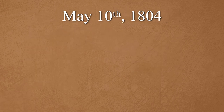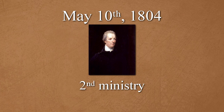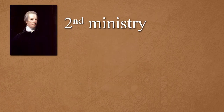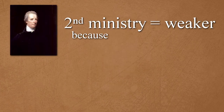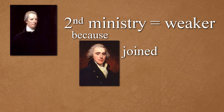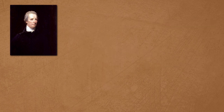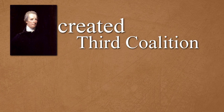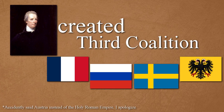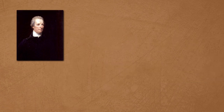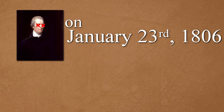On May 10th, 1804, Pitt's Second Ministry began. The Second Ministry was much weaker because Addington and his allies joined the opposition. The only significant thing Pitt accomplished in his Second Ministry was creating the Third Coalition with France, Russia, Sweden, and Austria. Pitt's Second Ministry was cut short by his death on January 23rd, 1806, at the age of 46.